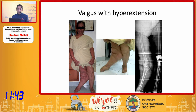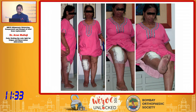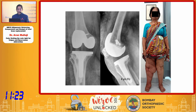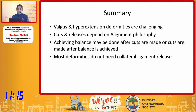This is a combination of valgus with hyperextension on the right side — the left knee was done years ago by another surgeon and you can see it is getting stretched laterally. This patient underwent a sliding lateral condylar osteotomy with a PS implant, perfectly aligned, and the four-year follow-up shows absolutely no change in the implant — stable and well aligned.